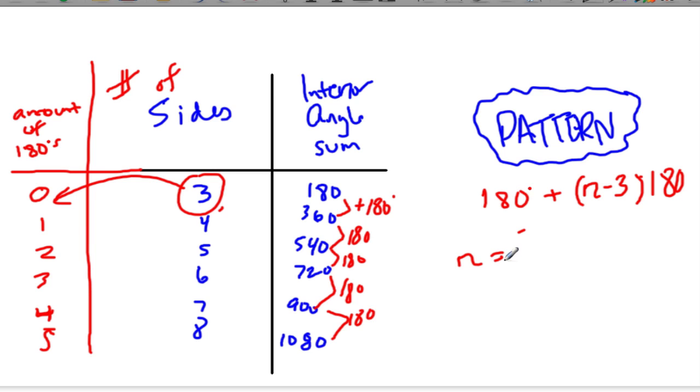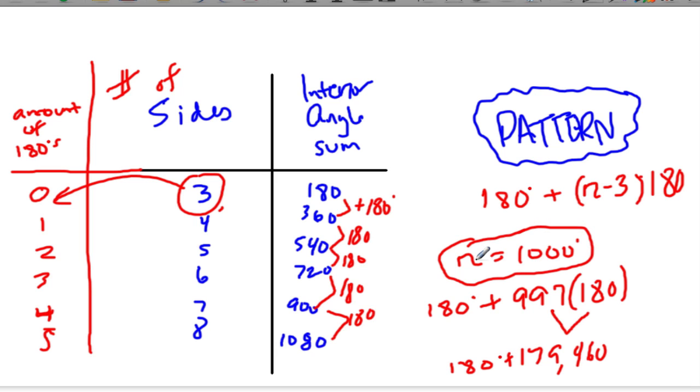So what about if n equals 1,000 degrees? What will happen? Well, we know that we have 180 degrees to start with. And then we have to add 997 times 180. So because every time we go up one step, we're adding 180 degrees. So we're doing this 997 times. And multiply these two numbers and add it to 180 to get our result. So when we multiply this, we get 179,460. Add them up, get 179,640. And that's the total number of degrees in a thousand-sided polygon. So you can use this pattern to find out the interior angle sum for a polygon with any number of sides.